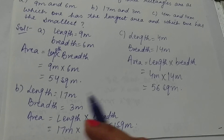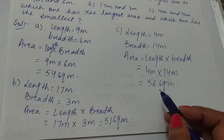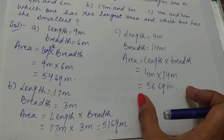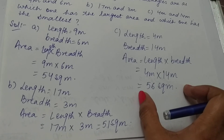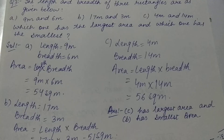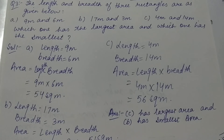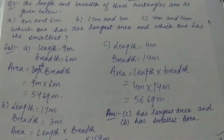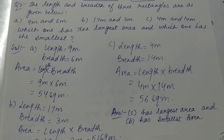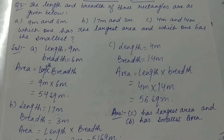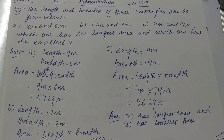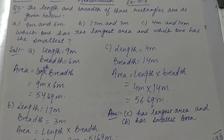Now comparing the areas: part C has the largest area (56 square meters) and part B has the smallest area (51 square meters). So we write: C has the largest area and B has the smallest area. This completes question number three of Exercise 10.3.